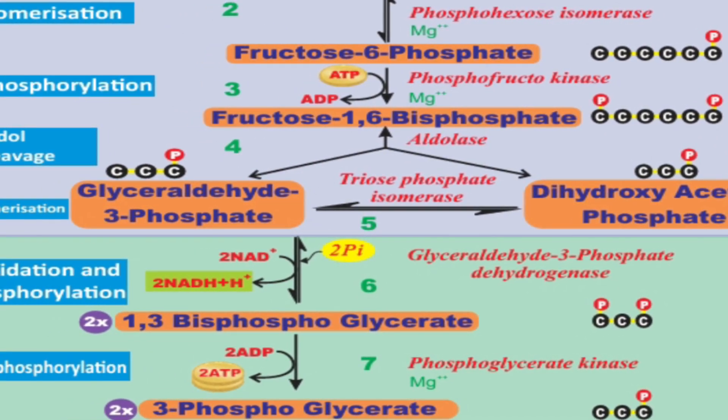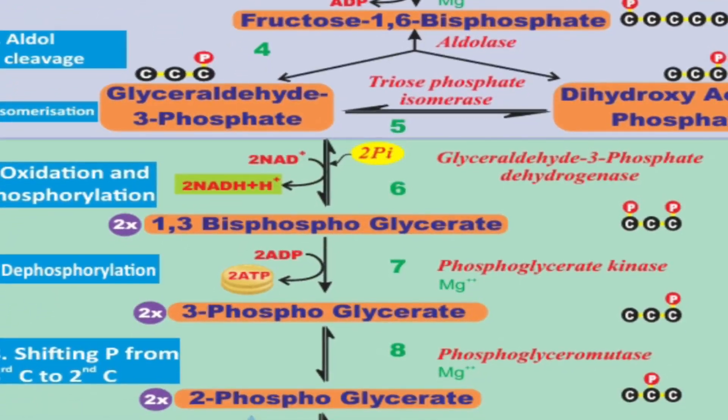In the fourth step, fructose 1,6-bisphosphate is cleaved into two 3-carbon compounds: glyceraldehyde 3-phosphate (G3P) and dihydroxyacetone phosphate (DHAP). This reaction is called aldol cleavage and the enzyme is aldolase. This completes the preparatory phase.